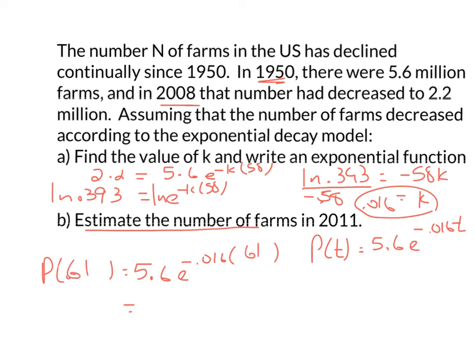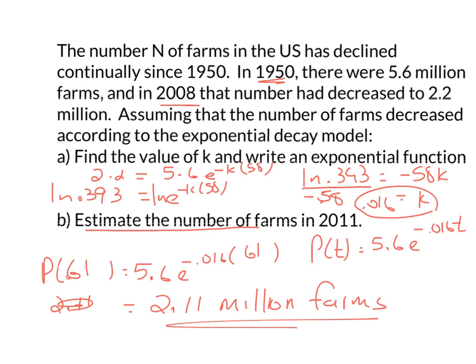I plug 61 in for t: 5.6 times e to the negative 0.016 times 61, and I get approximately 2.11 million farms in 2011. It didn't drop a whole lot from 2008 — actually almost another 100,000 in three years — so it's still decreasing.